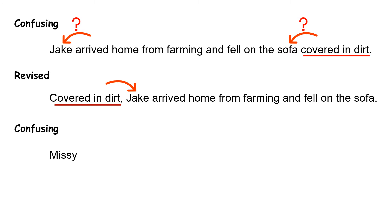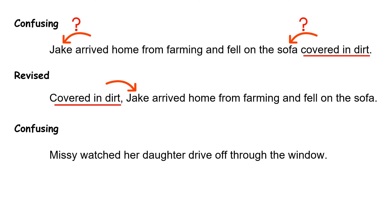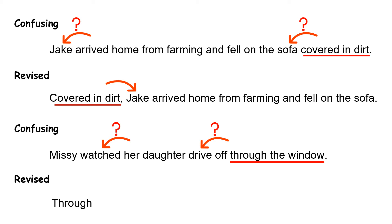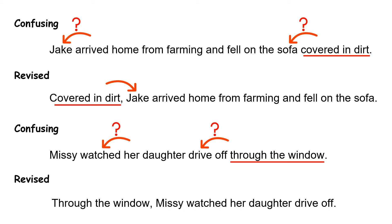Here's another confusing one: Missy watched her daughter drive off through the window. 'Through the window' is a prepositional phrase. Is it telling where her daughter drove off through, or where Missy watched? Here's a revised version: Through the window, Missy watched her daughter drive off. Now 'through the window' is describing how Missy watched.